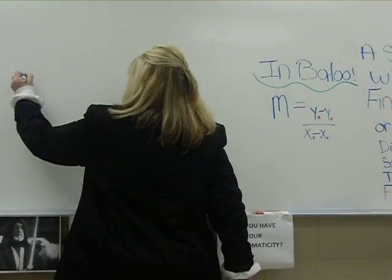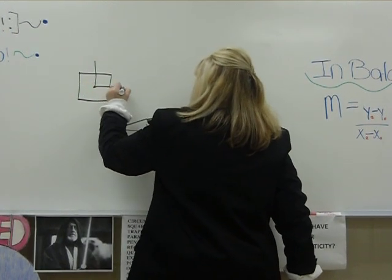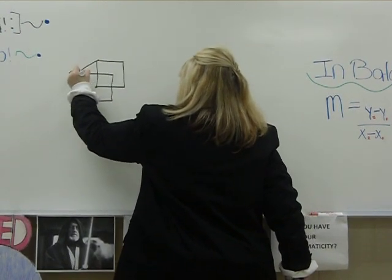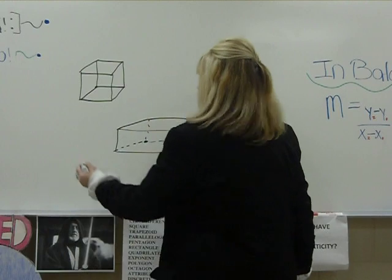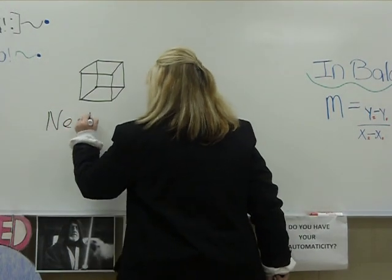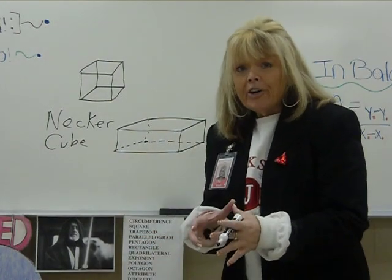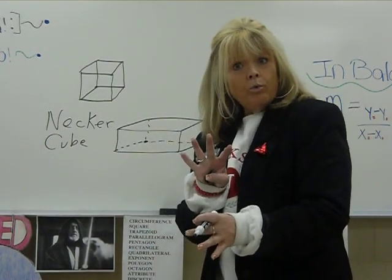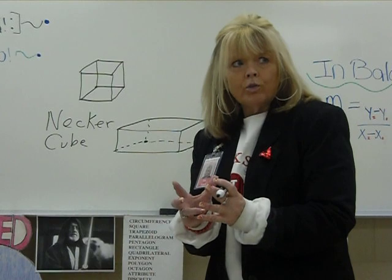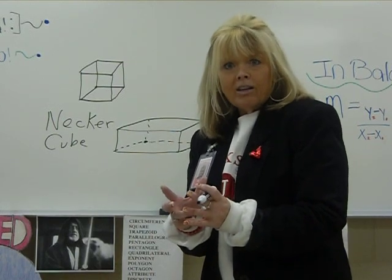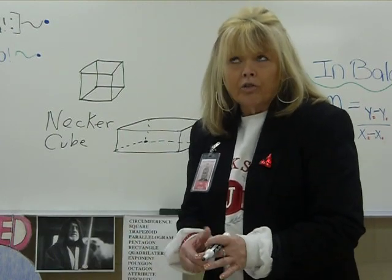I'm going to draw a cube this time, but I'm not going to dot this time — no dotted lines. Watch this. If you do it and they're not dotted, then it makes what's called a Necker cube. They say if you stare at it, you'll see it coming out one way and then it'll flip and come out a different way — it messes with your brain. It's called a Necker cube because a guy named Robert Necker discovered it.